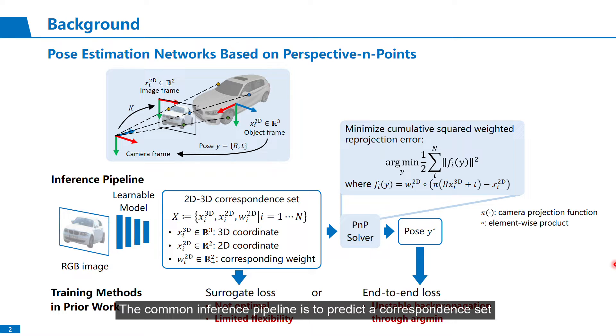The common inference pipeline is to predict the correspondence set consisting of 3D coordinates, 2D coordinates, and weights, from which object pose can be solved by minimizing the squared-weighted reprojection error, denoted by f.